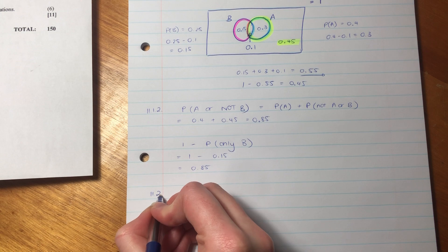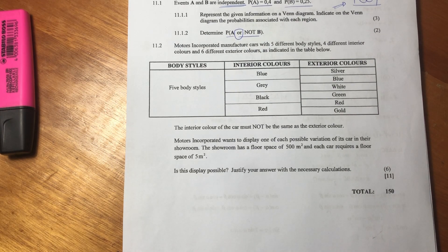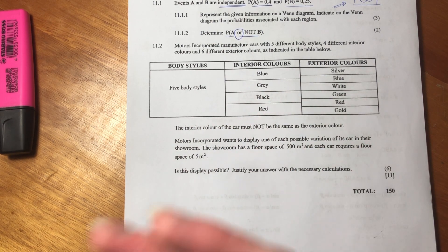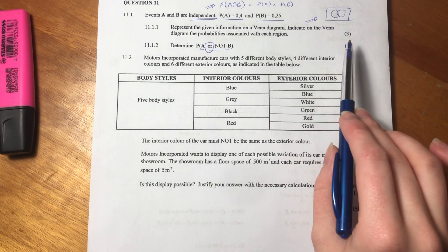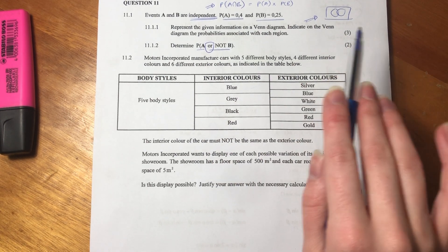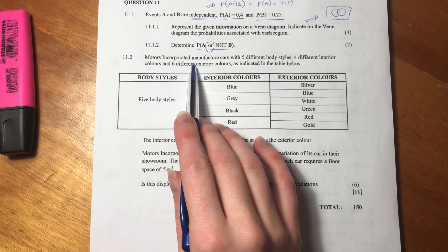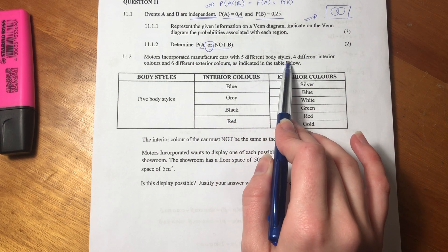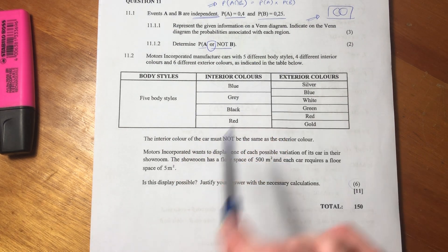Let's now look at 11.2. Now 11.2 is a really cool question — I love these sorts of combinations of things. It's for six marks, which is more than both the previous questions combined, so this is one we want to get right. Motors Incorporated manufacture cars with five different body styles, four different interior colors, and six exterior colors, as indicated in the table below.